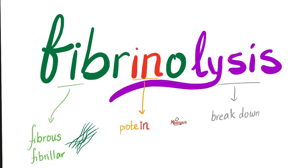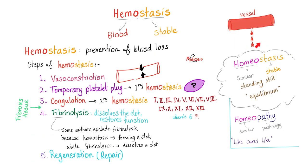The other topic we will review quickly is fibrinolysis. You cut your finger — what happens? First, vasoconstriction to stop the bleeding; then temporary platelet plug, also known as primary hemostasis; then coagulation factors, or secondary hemostasis, to stop the bleeding. After making a robust thrombus to stop the bleeding, what's the fate of the thrombus? If the injury is gone, it's time to remove the clot, destroy it, break it down, go back to normal, regenerate the tissue, and let the blood flow smoothly.